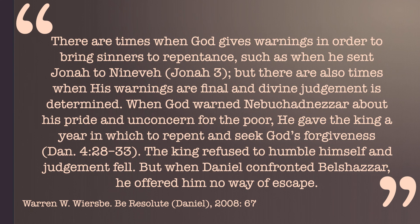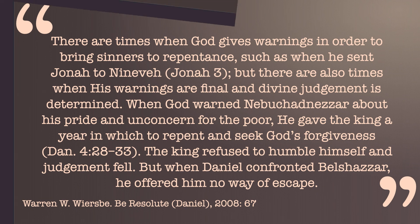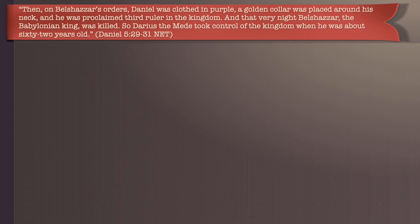Warren Wiersbe points out that there are times when God gives warnings to bring sinners to repentance, such as when he sent Jonah to Nineveh, but there are also times when his warnings are final and divine judgment is determined. When God warned Nebuchadnezzar about his pride, he gave the king a year to repent — the king refused and judgment fell. But when Daniel confronted Belshazzar, he offered him no way of escape. This is judgment rather than warning. At Belshazzar's command, Daniel was clothed in purple, a gold chain hung around his neck, and a proclamation was made that he should rank third in the kingdom. And that very night, Belshazzar was killed.